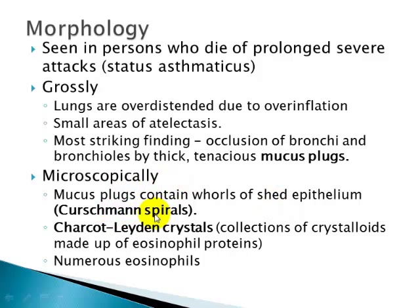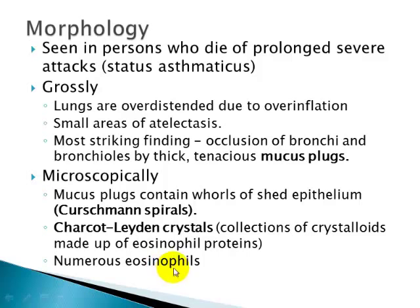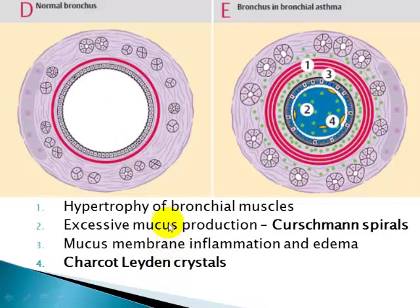Microscopically, the mucus plugs may contain whorls of shed epithelium called Curschmann spirals. Charcot-Leyden crystals are protein crystalloids secreted from eosinophils. Numerous eosinophils are seen in atopic asthma, while neutrophils predominate in non-atopic asthma. The presence of abundant eosinophils indicates allergic etiology, increased IgE production, and atopic asthma.